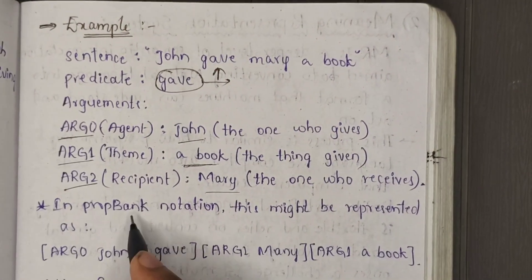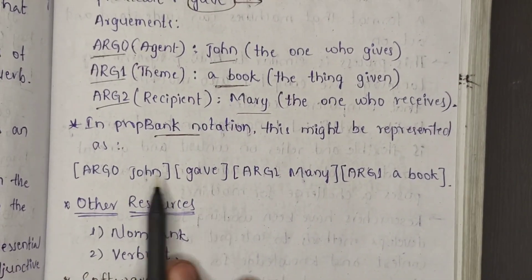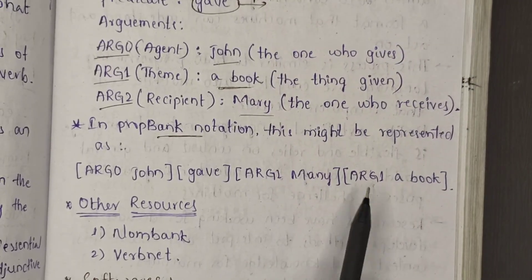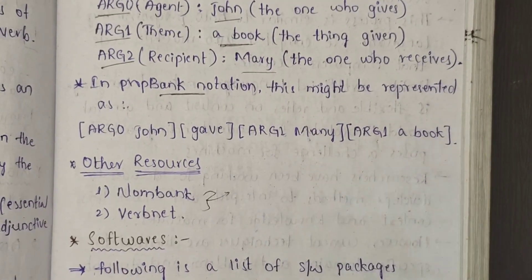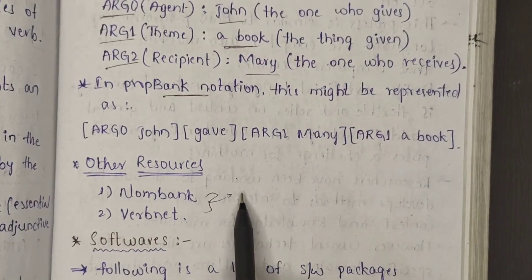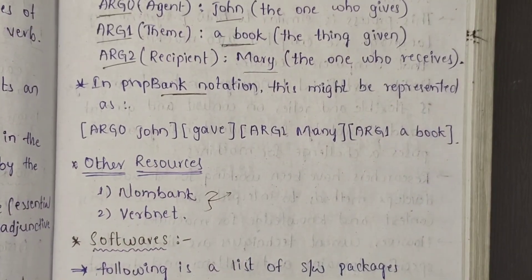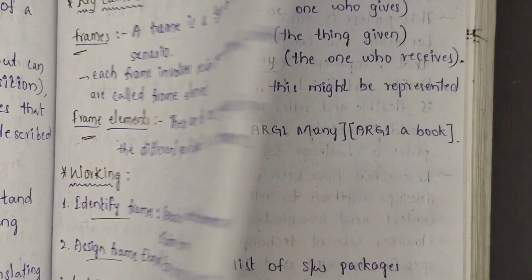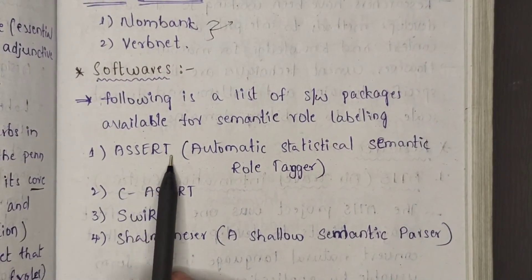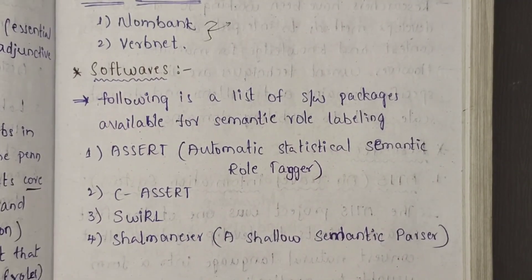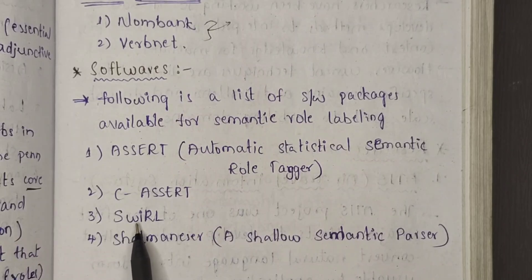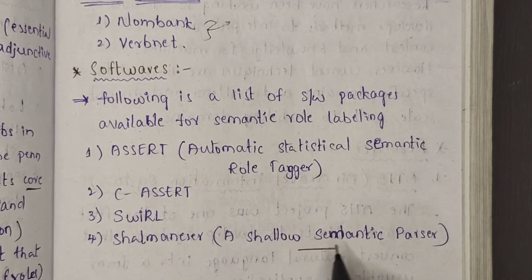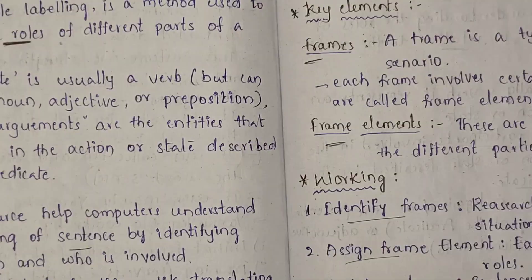In PropBank notation, we represent this as: Argument 0 — giver (John), Argument 1 — thing given (book), Argument 2 — receiver (Mary). Other resources include NormBank and VerbNet. These are two types of predicate argument structure representation approaches. Software used includes ASSERT (Automatic Statistical Semantic Role Tagger), CSERT as an upgraded version, and SWIRL — also software for semantic parsing.